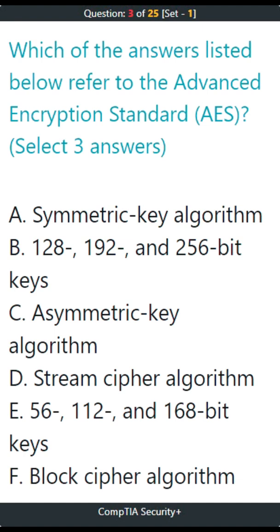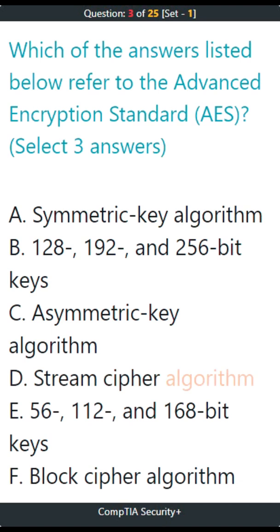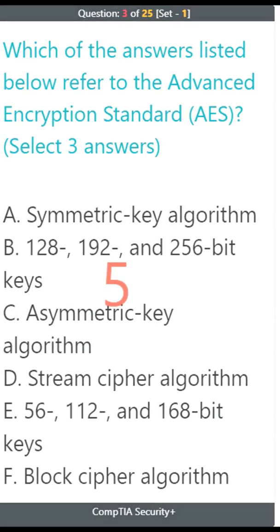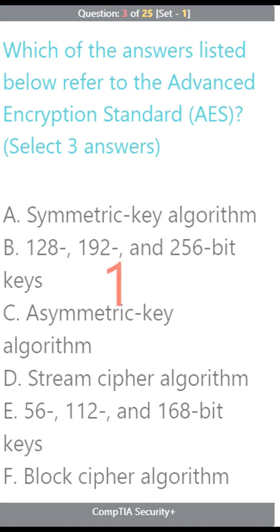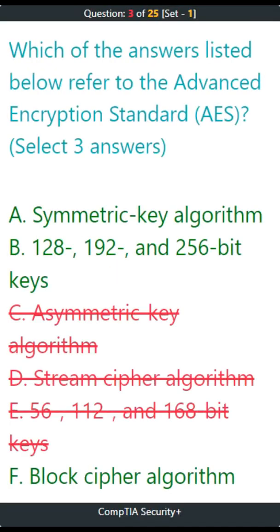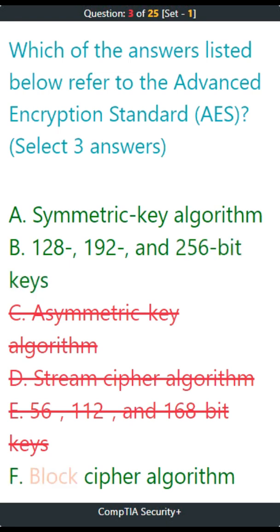Question 3. Which of the answers listed below refer to the Advanced Encryption Standard, AES? Select 3 answers. A. Asymmetric Key Algorithm, B. 128-192-256-bit keys, C. Asymmetric Key Algorithm, D. Stream Cipher Algorithm, E. 56-112 and 168-bit keys, F. Block Cipher Algorithm. The correct answers are A. Asymmetric Key Algorithm, B. 128-192 and 256-bit keys, F. Block Cipher Algorithm.